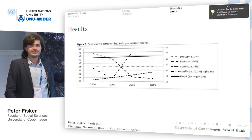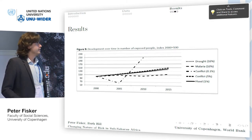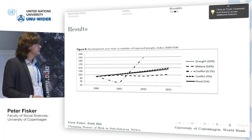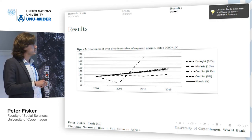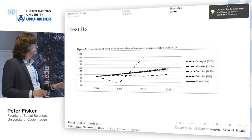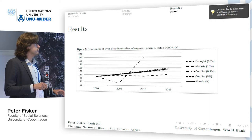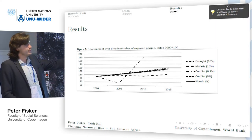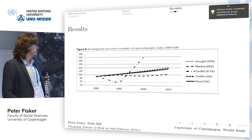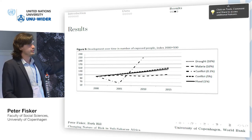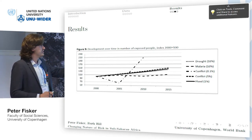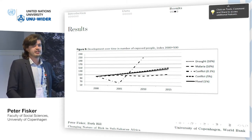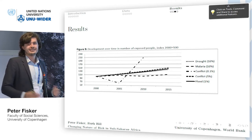Looking at the number of people exposed — indexed to 2000 as 100 — for the three indicators dependent only on population movements with a fixed hazard, we see that drought, floods, and the broad definition of conflict show around 50% more people exposed now than in 2000. Malaria exposure, looking at prevalence of 10%, is relatively stable over the period. The number of people exposed to conflict goes up and down because conflicts end and start in new places.